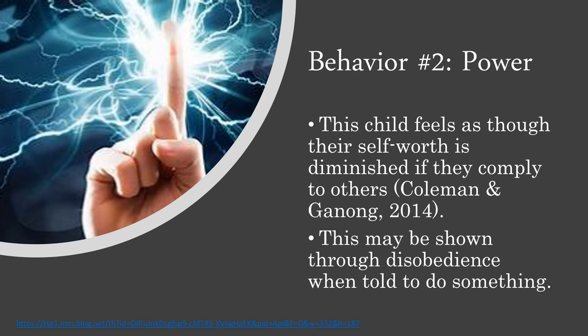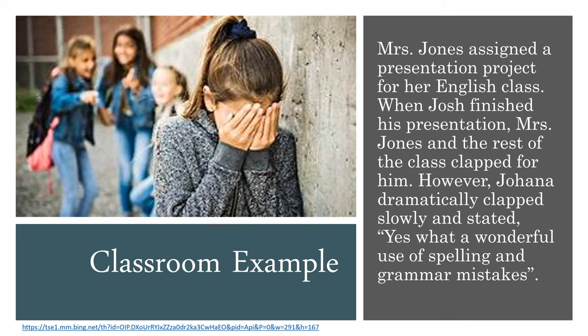The second mistaken goal is power. This child feels as though their self-worth is diminished if they comply with others, and this may be shown through disobedience when being told to do something by their teacher or fellow classmate. In this scenario, Mrs. Jones assigned a presentation project for her English class. When Josh finished his presentation, Mrs. Jones and the rest of the class clapped for him. However, Joanna dramatically clapped slowly and stated, 'Yes, what a wonderful use of spelling and grammar mistakes.' In this instance, Joanna is trying to put herself above Josh academically.